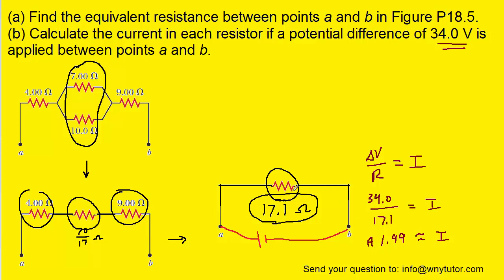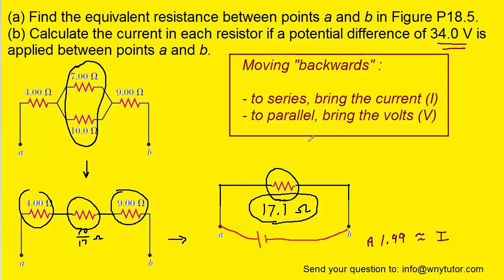Now that's not yet our final answer. What we need to do next is work our way backwards back to the original circuit. And when we do that, when we work backwards through a circuit, we need to keep two rules in mind. So here are the rules. You probably want to pause the video and just look at them for a moment before moving on. The rules state that when we move backwards through a circuit to a series arrangement, then we're going to bring with us the current. If we move backwards to a parallel arrangement, we will bring with us the volts.